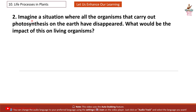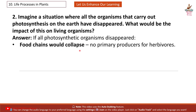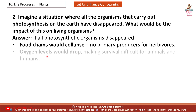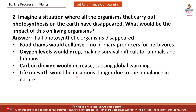Question 2: Imagine a situation where all the organisms that carry out photosynthesis on the earth have disappeared. What would be the impact on living organisms? Answer: Food chains would collapse with no primary producers for herbivores. Oxygen levels would drop, making survival difficult for animals and humans. Carbon dioxide would increase, causing global warming. Life on earth would be in serious danger due to the imbalance in nature.